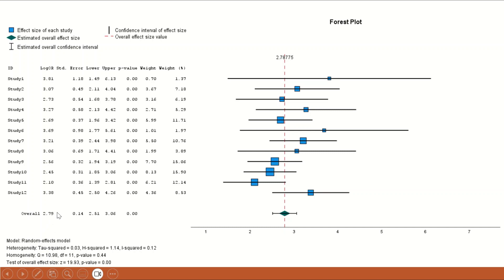The diamond shape represents the overall odds ratio for the 12 studies. The overall odds ratio is 2.79, with a 95% confidence interval also produced, where the horizontal width of the diamond represents the confidence interval. The third section shows the heterogeneity test, which examines the degree of variability among the results from those 12 studies. The I-squared value is 12%, indicating a low level of heterogeneity, with a p-value greater than 0.05.